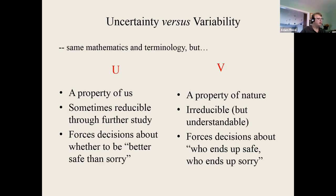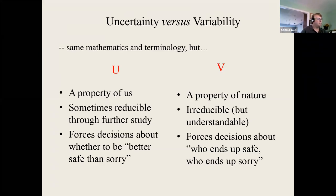Uncertainty for the decision maker forces you to think about things like: to what extent should we be safe rather than sorry? Whereas variability is a property of the universe — it's not reducible. People's heights and weights are distributed as they are. But we can understand better how that property is distributed. It's a very different practical mindset because it forces you to think not about precaution in the broad sense, but about who gets to be safe and who ends up being sorry.